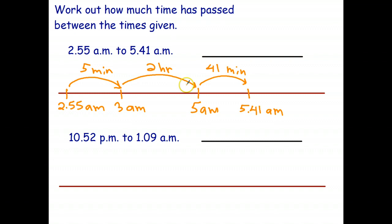So, we've got 2 hours. 5 plus 41 is 46. So, that's a total of 2 hours, 46 minutes.